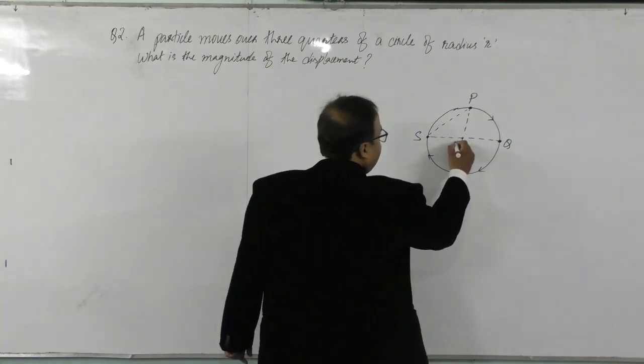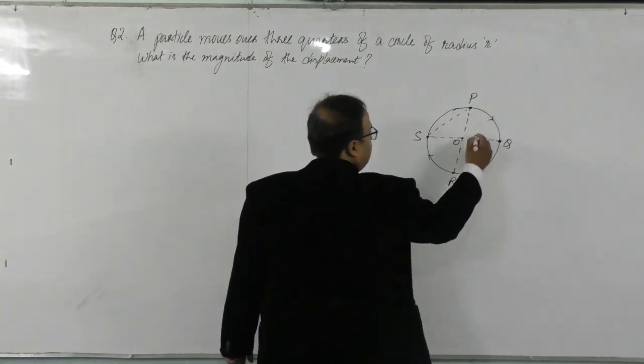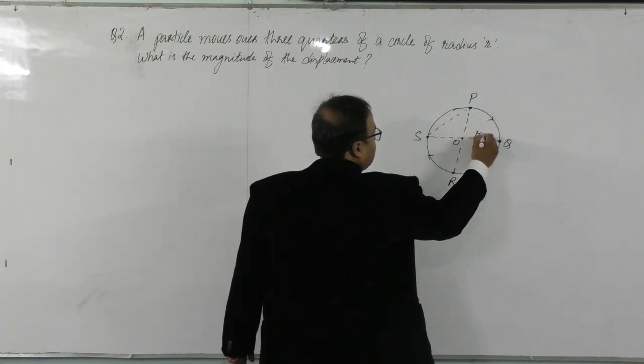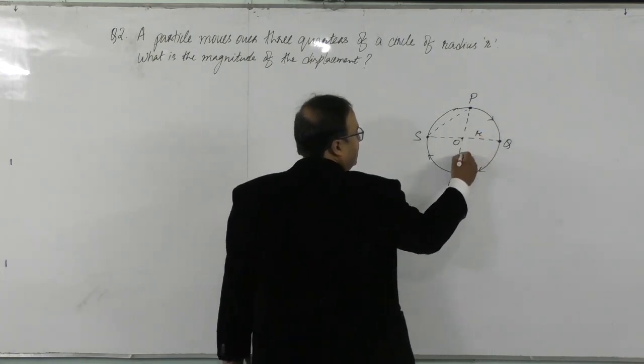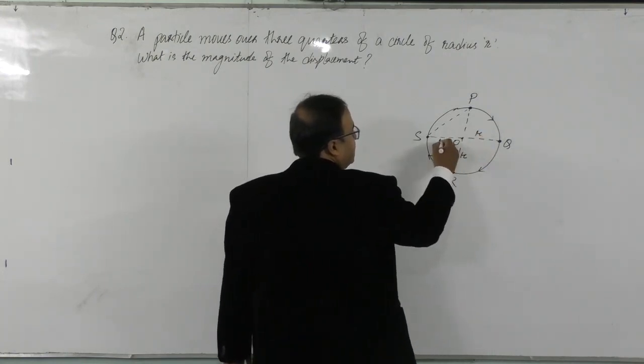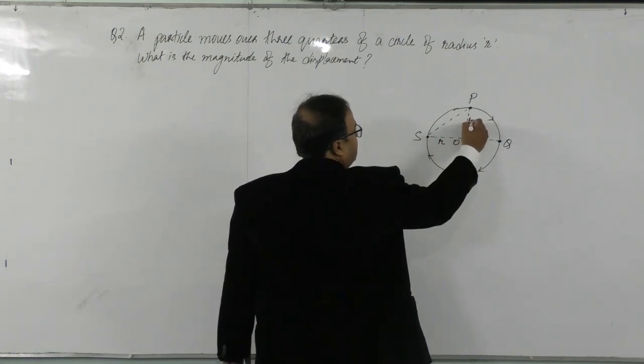So question me given hai, if I consider this as O, center of the circle, question me given radius is r. So if this is r, this will also be r, this will also be r, this will also be r.